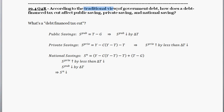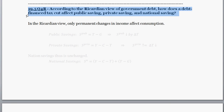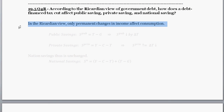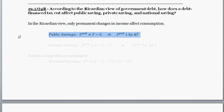The traditional view holds that consumption is affected by the marginal propensity to consume. Now let's look at part two from the questions for review, where we examine the Ricardian view. This question asks: according to the Ricardian view of government debt, how does a debt-financed tax cut affect public savings, private savings, and national savings? In the Ricardian view, only permanent changes in income affect consumption. Remember, this is a temporary tax cut financed by debt.